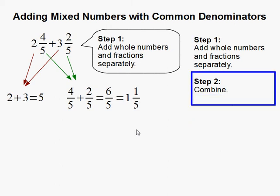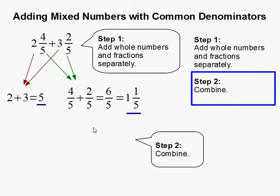Step 2, combine. So now we are going to combine our result from adding the whole numbers and the fractions. 5 plus 1 gets you 6, and we carry the fraction over.